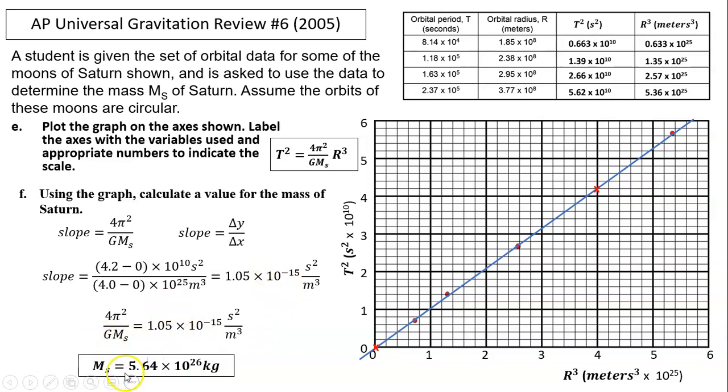Then from this slope, we can find Ms. Plug all the numbers in. This is what I have for the mass of Saturn: 5.64 times 10²⁶ kilograms. So that's it for today. Thanks for watching. See you next time.